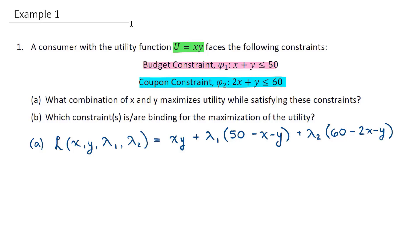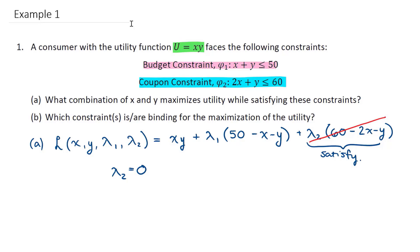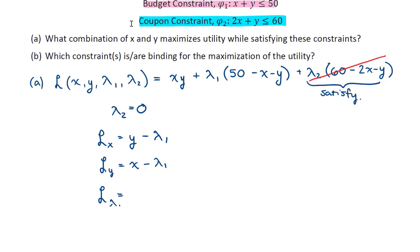Now, we're going to assume one of these constraints will be naturally satisfied. Which constraint do you want to assume is naturally going to be satisfied? Constraint 2 will be satisfied. To assume that, we set lambda 2 equal to 0, thus ignoring that term. Taking derivatives: with respect to x, I get y minus lambda 1; with respect to y, I get x minus lambda 1; and with respect to lambda 1, I get 50 minus x minus y.